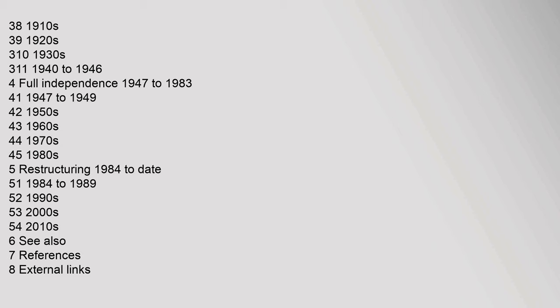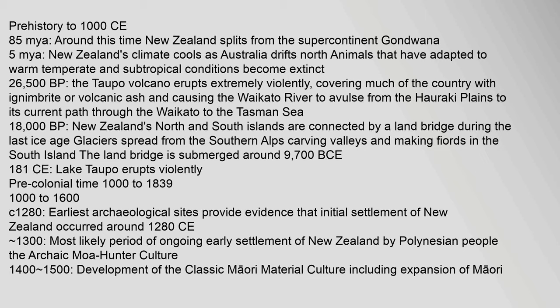Prehistory to 1000 CE. Around 85 million years ago, New Zealand splits from the supercontinent Gondwana. Around 5 million years ago, New Zealand's climate cools as Australia drifts north; animals that had adapted to warm temperate and subtropical conditions become extinct.